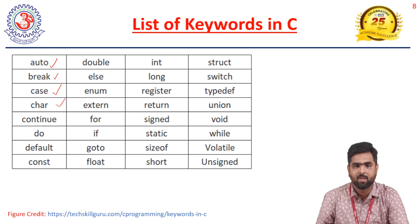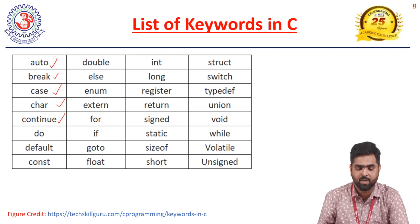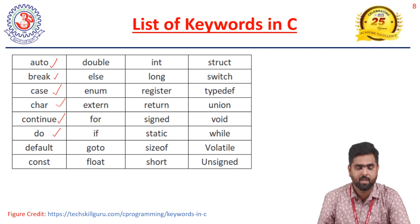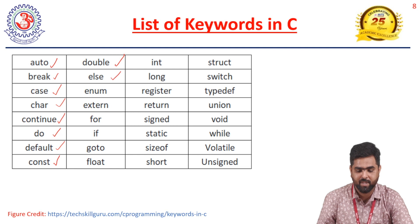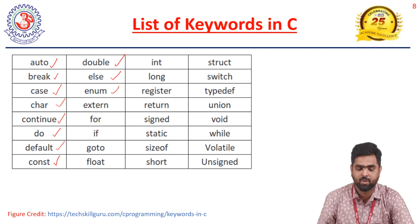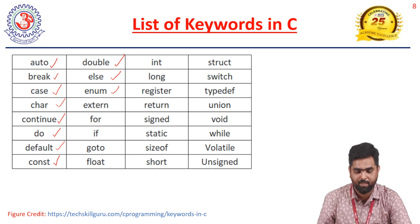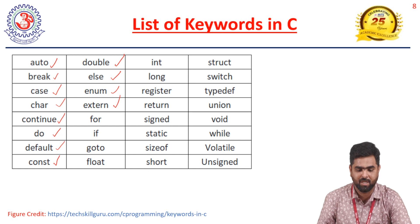'Do' comes under looping statements. 'Default' is used in the switch statement. 'Const' — written as c-o-n-s-t — is used for constants. 'Double' comes under data types. 'Else' comes under conditional statements. 'Enum' is used to define different types of values under the same data type (enumerated). 'Extern' is a storage class keyword. 'For' is used in looping statements.